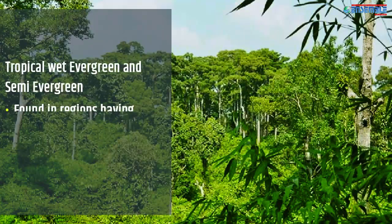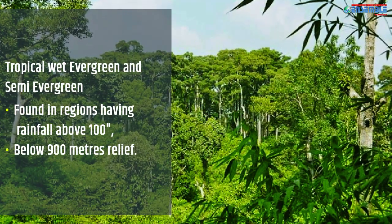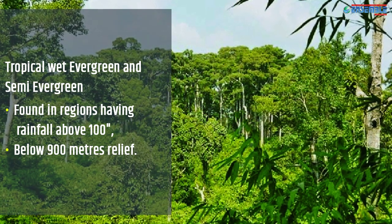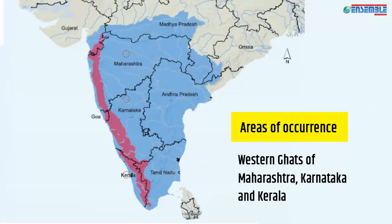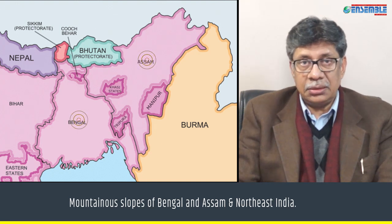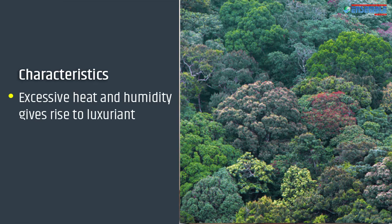Tropical wet evergreen and semi-evergreen forests are found in regions having rainfall above 100 inches, below 900 meters of elevation. There are three areas of their occurrence: the Western Ghats of Maharashtra, Karnataka and Kerala; mountainous slopes of Bengal and Assam; and northeastern India. This region is characterized by excessive heat and humidity, which gives rise to a luxuriant growth of trees — the high temperature and high moisture combine to support dense vegetation.